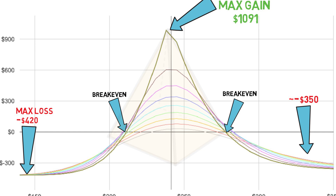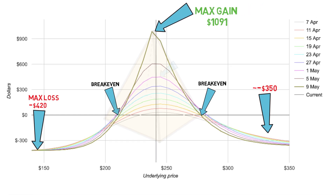The earlier you sell, the smaller the pyramid, as you can see from the other lines in the graph, which represent selling at different dates. The earlier you sell, the worse your max gain. This goes back to our initial conversation stating that calendar spreads profit from time. Look at the pink line, which represents selling on May 1st, about 7 days earlier than our expiration. Even if Apple is at our maximum gain point of $240 a share, our profit if we were to sell that early is $452 — not bad, but not the $1,091 you would get by waiting 7 more days and hoping Apple closes around the same price.